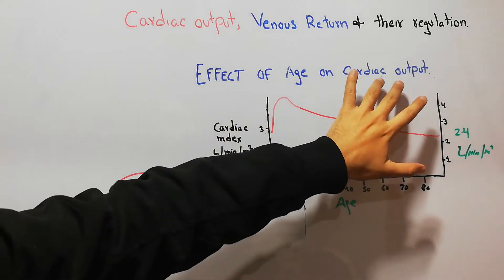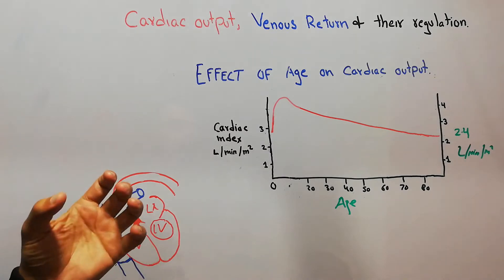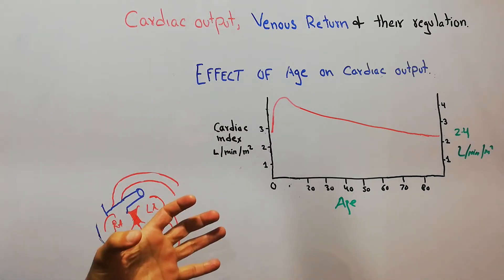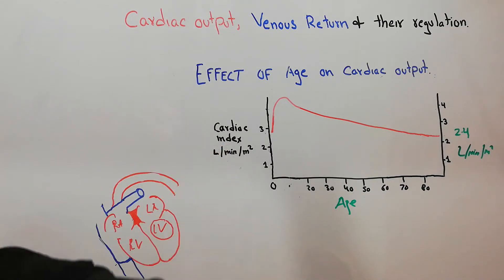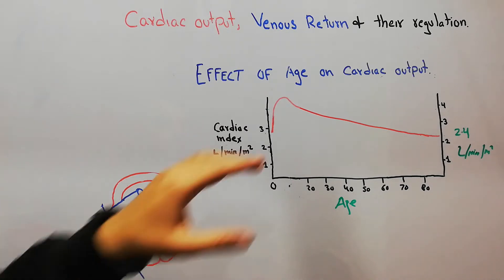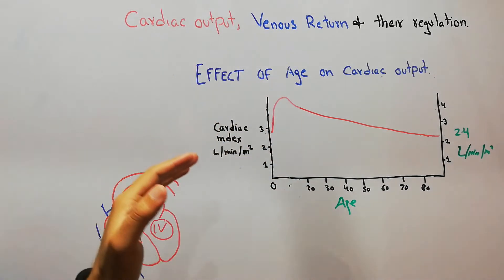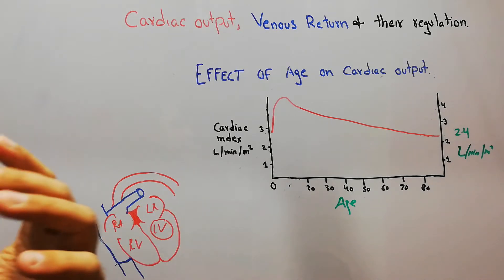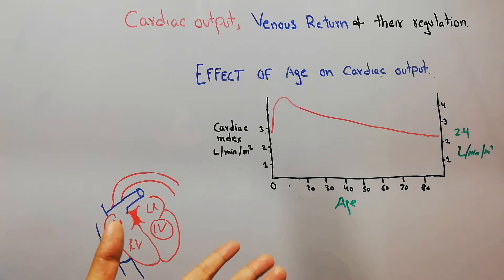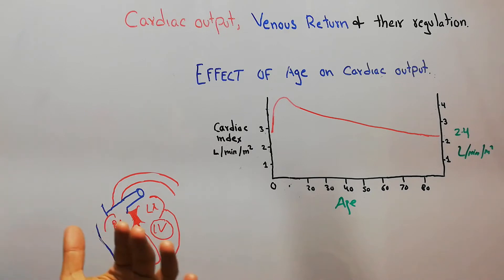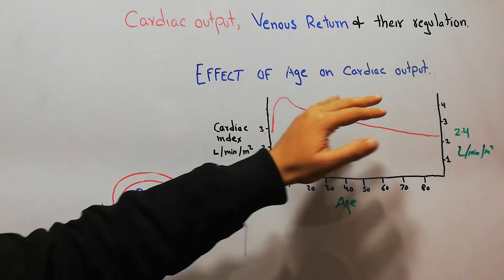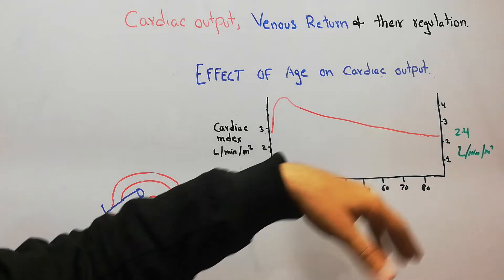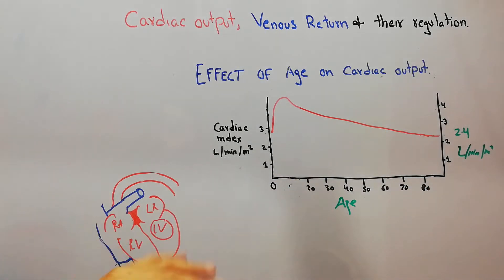Cardiac output, the amount of blood pumped per minute by the heart, changes with a lot of factors. It changes with age, with the metabolism of the body, and with the weight of the body. A lot of diseases also change the cardiac output; some diseases increase it.